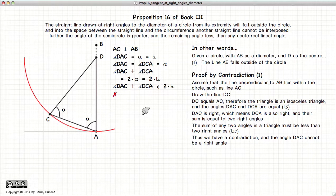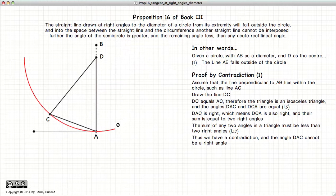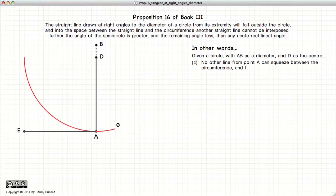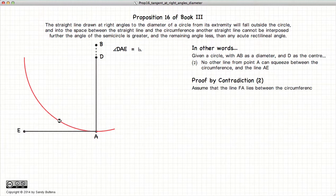Having obtained the contradiction, we have proven that the line that is perpendicular to our diameter must fall outside of the circle. Continuing on with the second part of this proof, we are stating that we cannot squeeze a line in between EA and the circumference of the circle.